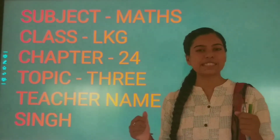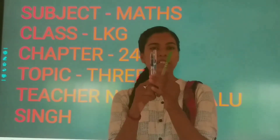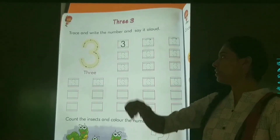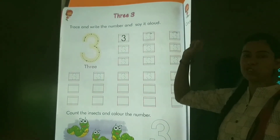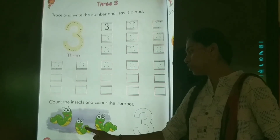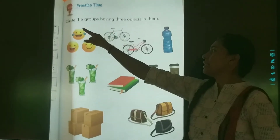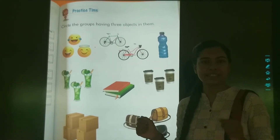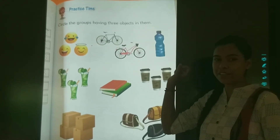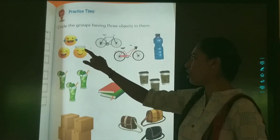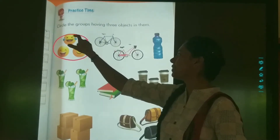Now we are going to learn the next number, that is three. How many objects are there? One, two and three. Press and write the number and say it aloud — three. Count the insects and color the number. You have to count the insects: one, two and three. Color the number three. Circle the groups having three objects in them. The group which has three objects, you have to circle it. Shall we circle this one? No, because it is a single object. Shall we circle this group? Yes, because it has three objects — one, two and three.